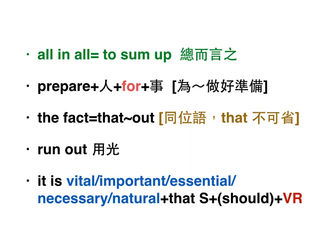後面的子句中有should被省略掉，所以不管主詞是第幾人稱，後面一律用原形動詞。當你遇到vital、important、essential、necessary、natural這些形容詞的時候記住，後面的that子句要注意should省略的用法。